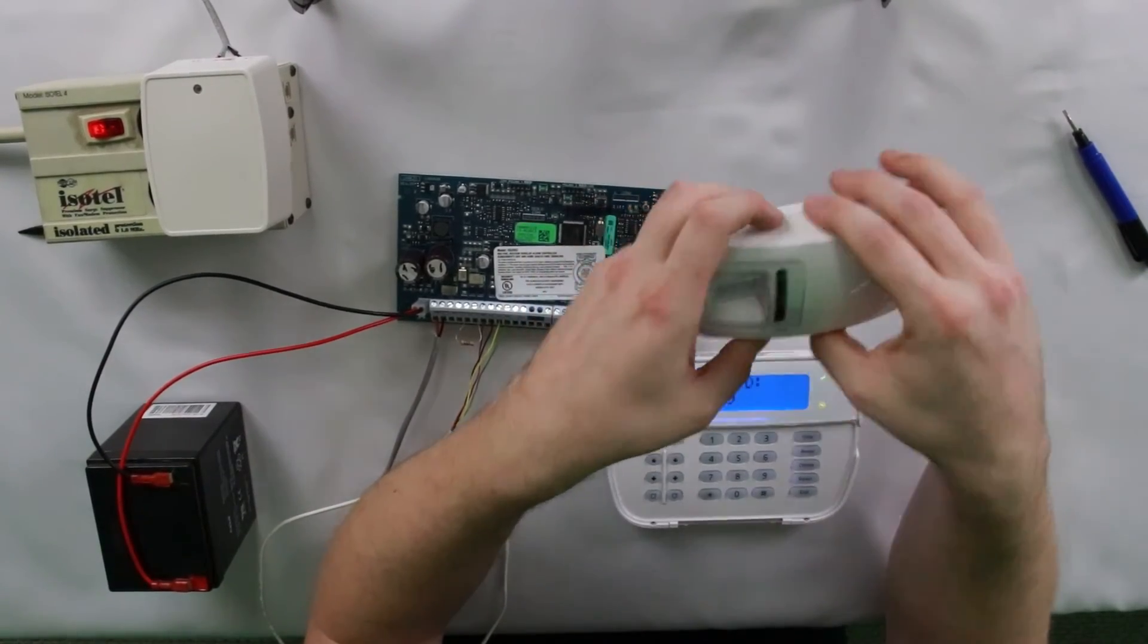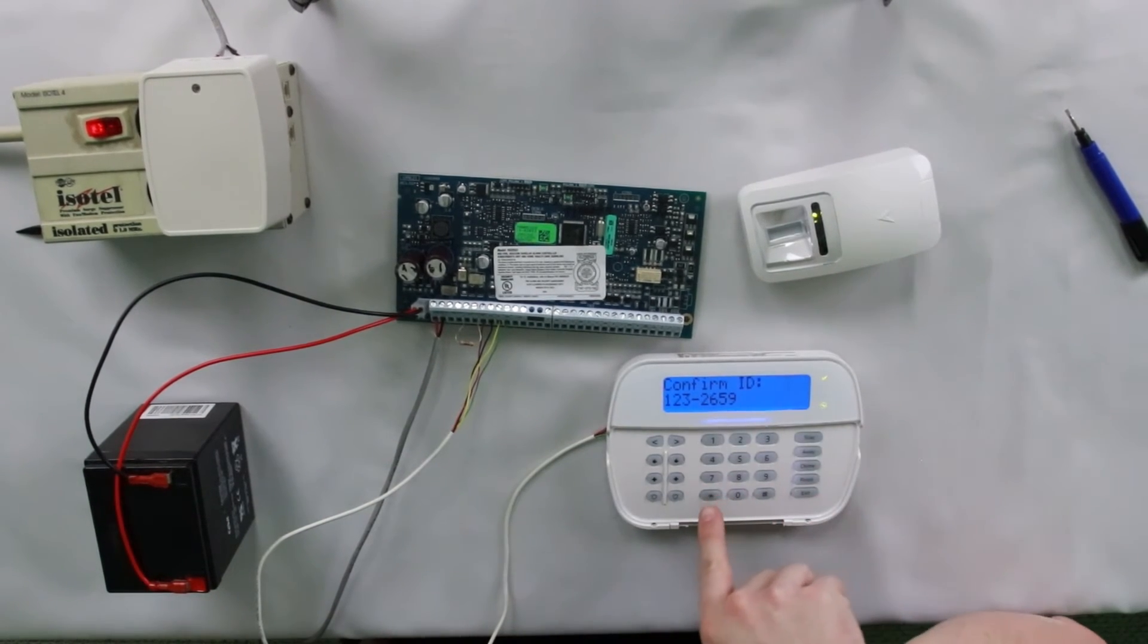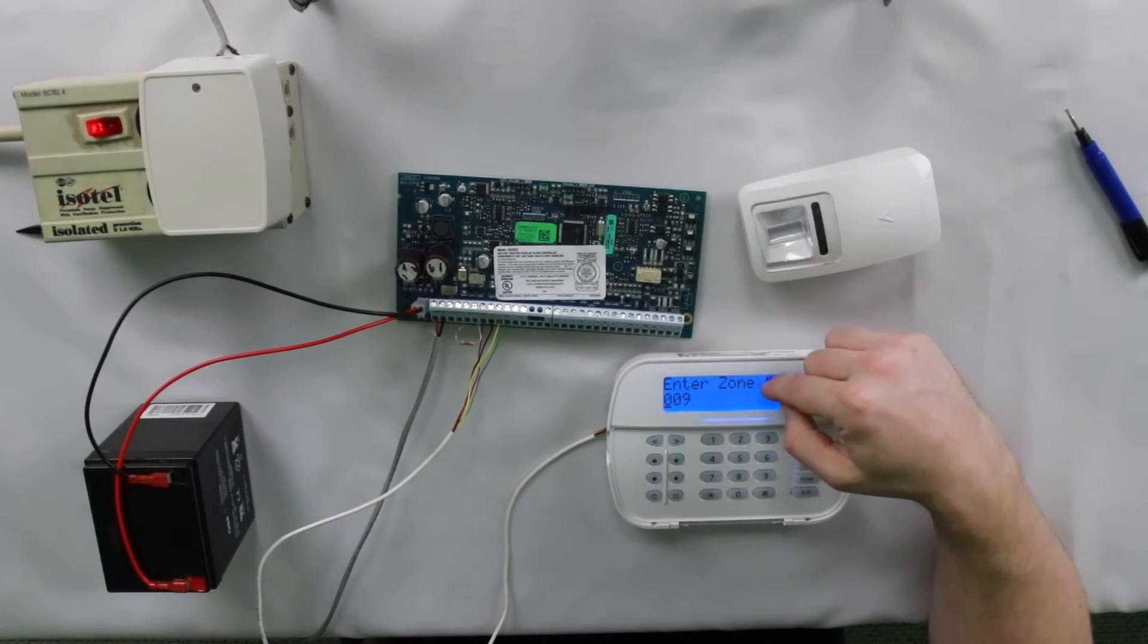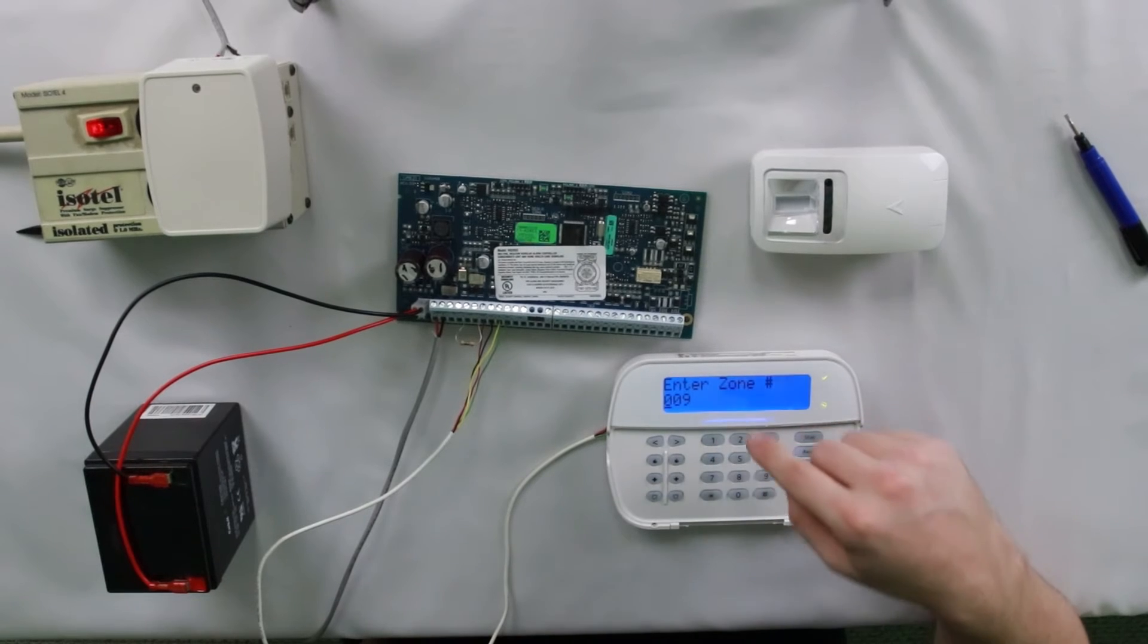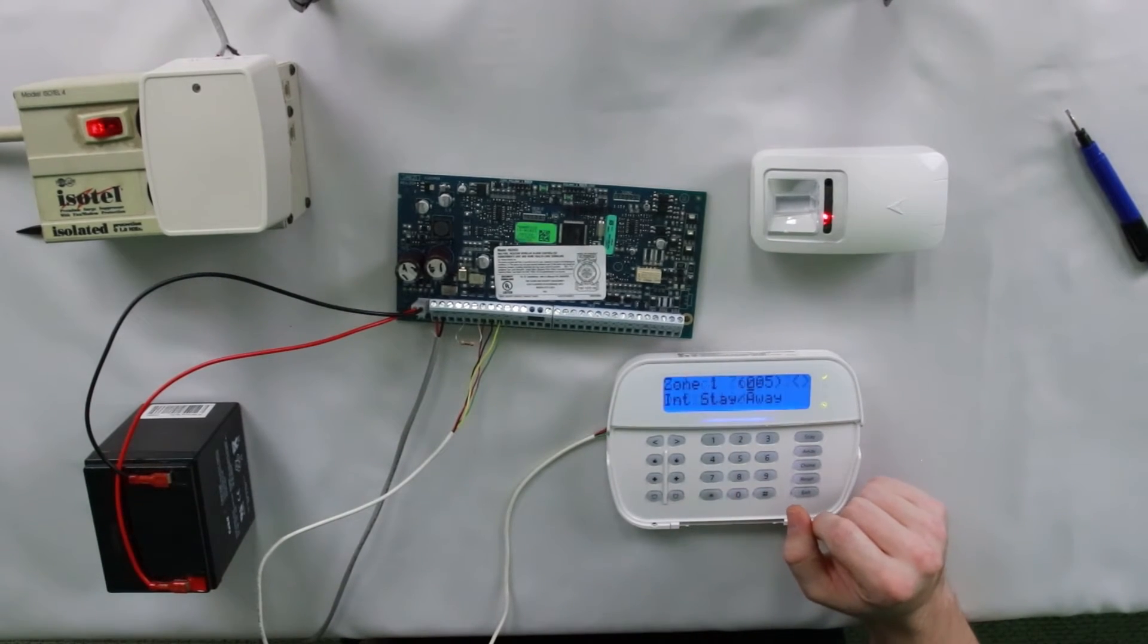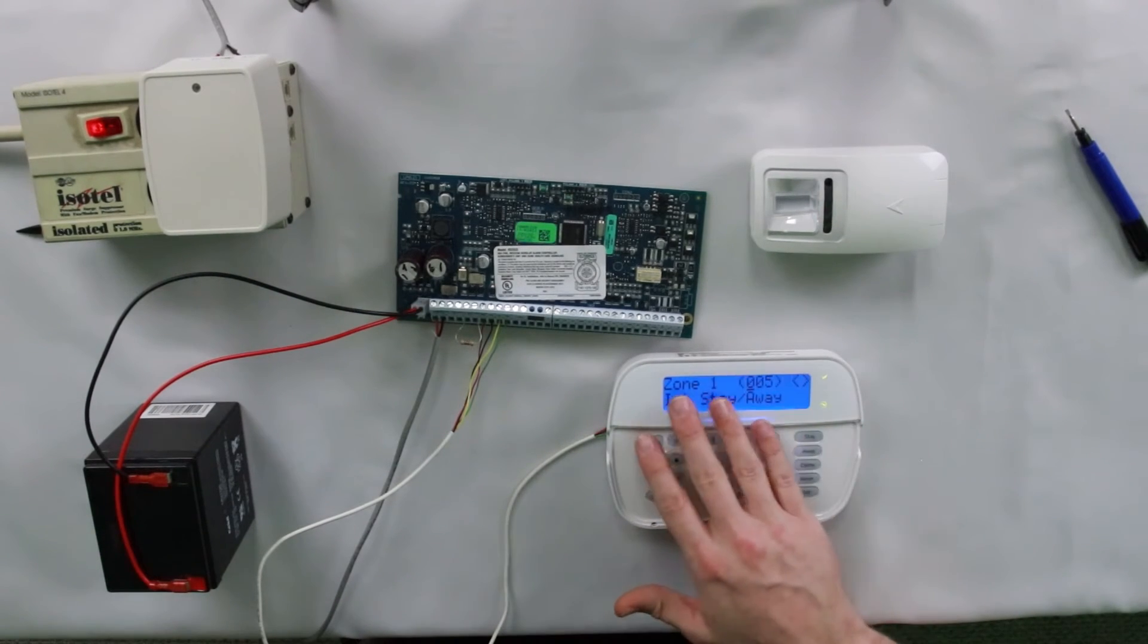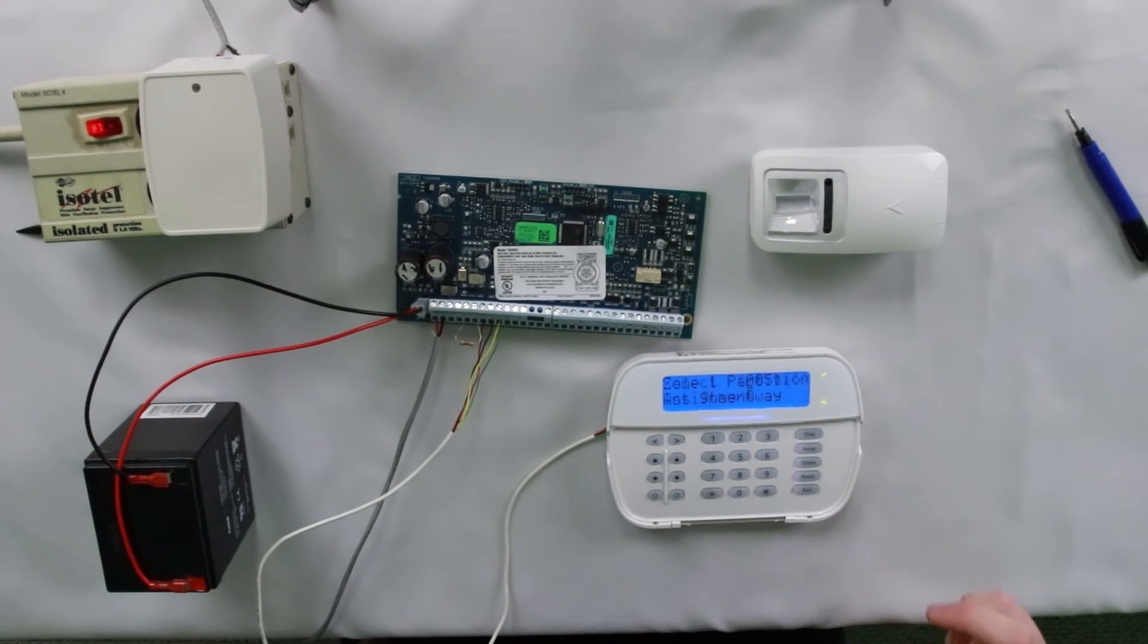Put it back together. It's going to say confirm ID on the keypad whenever it picks it up. You hit star here. Then it's going to ask you to enter the zone number that you want to enroll this device on. This was on zone 1, so I'm going to type in 001. It's going to ask for a zone definition. This will stay the same. If you enroll it on the same zone, you don't have to mess with the zone definition. It's already set. So just hit star again.